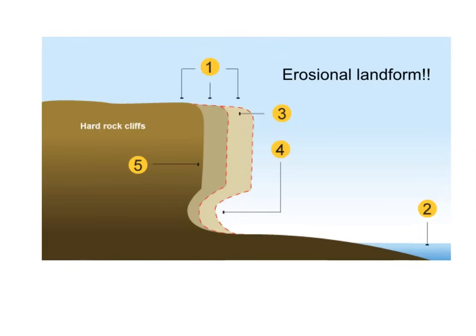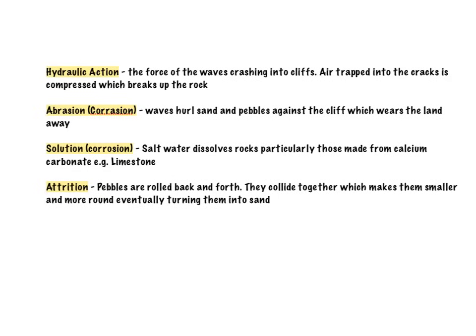Therefore, we must be aware of our different types of coastal erosion before going any further. Our four types of coastal erosion are firstly hydraulic action, which is simply the force of the waves crashing into the cliffs.